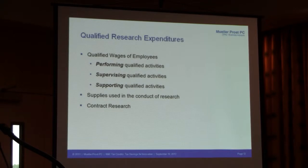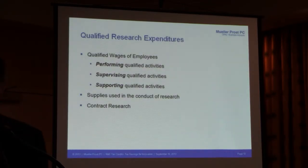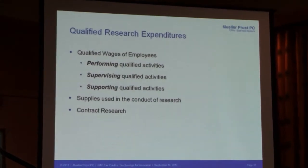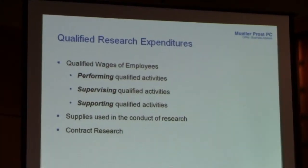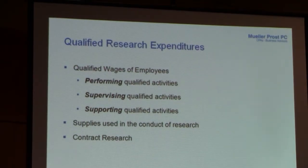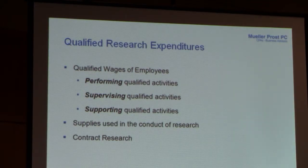There are three types of expenditures that qualify for this credit. The first and largest is wages — wages spent by employees performing qualified research. That could be an engineer developing or improving a design, a scientist performing an experiment, or a process engineer working on machinery to improve a manufacturing process. I also get to count directly supporting qualified research activities, such as a production line or quality employee supporting the research of that engineer.